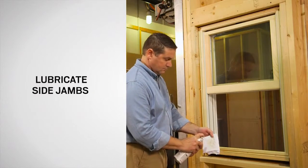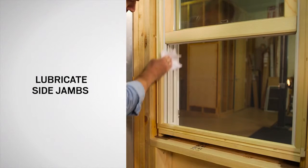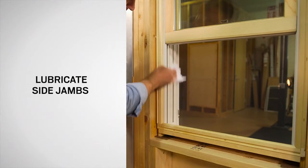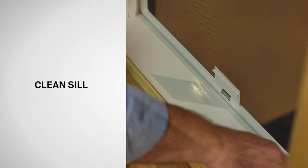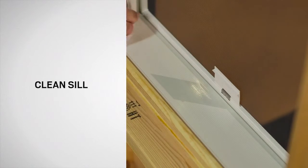Use dry silicone spray on a clean cloth to lubricate the side jams of your window. A clean cloth can be used to wipe away any debris from the window sill.